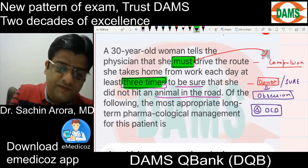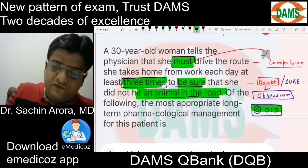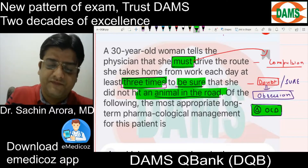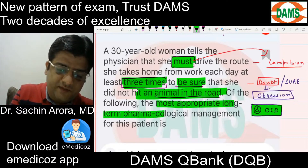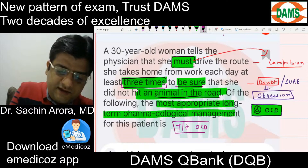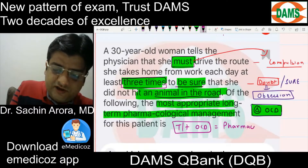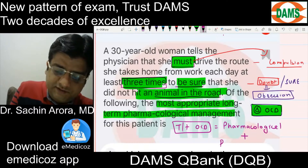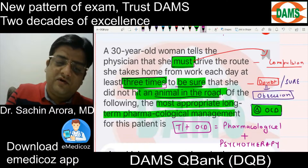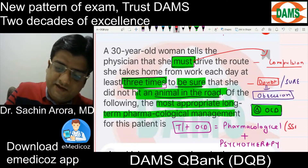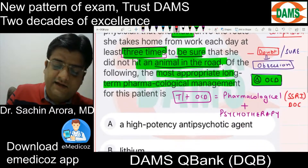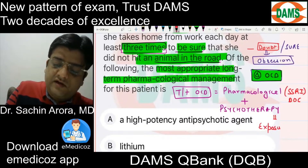They have mentioned three times to be sure that she did not hit an animal on the road. So this is the diagnosis of OCD — Obsessive Compulsive Disorder. The most appropriate long-term pharmacological management: treatment of OCD is pharmacological plus psychotherapy. The pharmacological drug of choice for OCD is SSRI, and the psychotherapy is Exposure and Response Prevention.